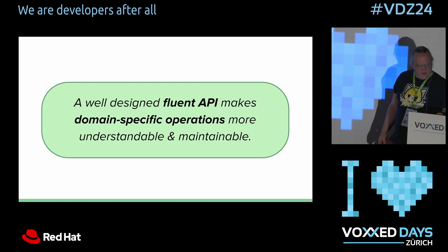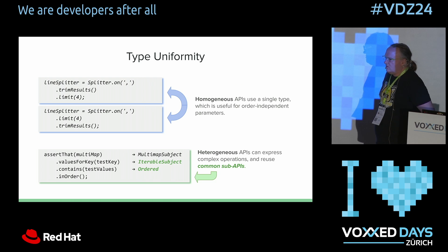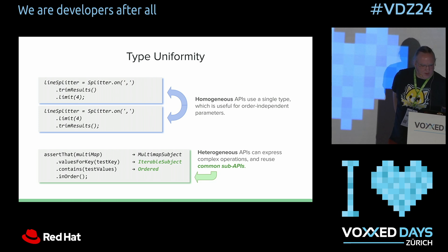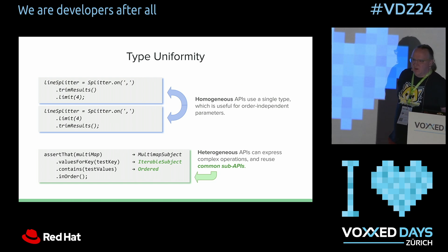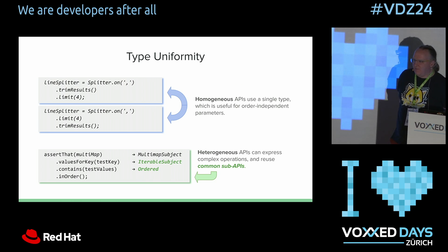A well-designed fluent API makes domain-specific operations understandable and maintainable. There are other design choices you can make when thinking about cascading and fluent APIs. One of these is type uniformity — whether or not you return the same type of object at each point in the chain. Homogeneous APIs return the same type of thing. Heterogeneous APIs can return different types. Neither is better than the other. Homogeneous APIs are good for optional parameters where you can vary the order of method calls; heterogeneous APIs guide the user through a series of distinct steps for more complex things.